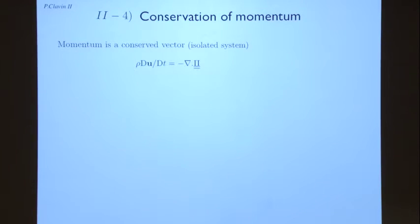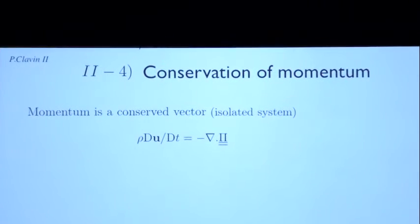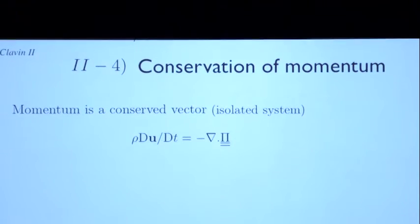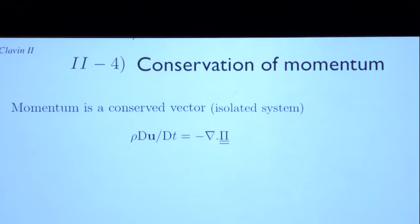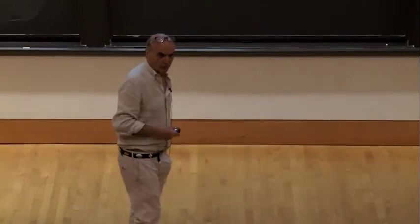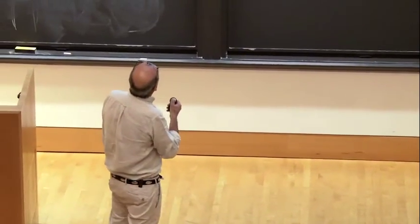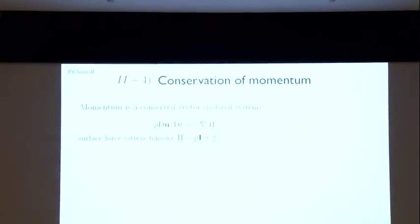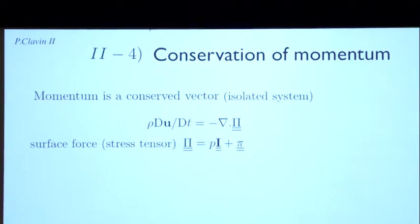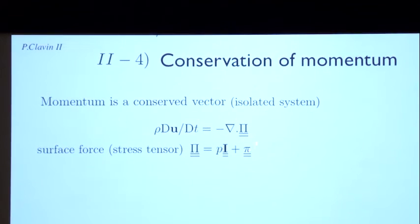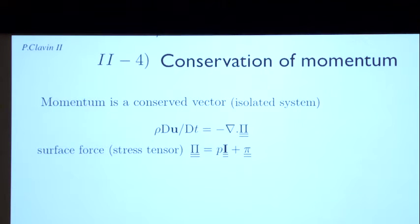Let me go to the conservation of momentum. When you have an isolated system, mechanics tells you that if you have an ensemble of particles isolated from the outside world, you should conserve the momentum. The equation of evolution should be written in a form where capital Pi is what we call the stress tensor. To refresh your mind: this tensor is decomposed into two parts — one isotropic part which is the hydrostatic pressure, P times the unit tensor, and the viscous effect in gas.